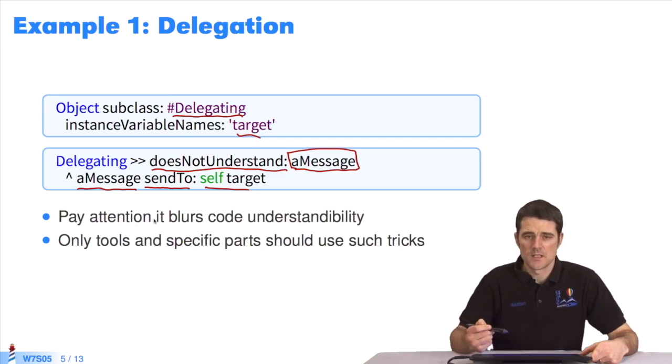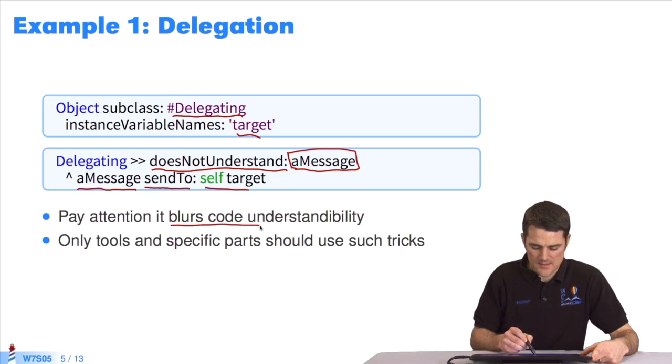Be careful, this is a powerful function that can interfere with the legibility of the code. As it's explained here, the code will show who ultimately receives the message. It's very useful for constructing tools and building advanced mechanisms.